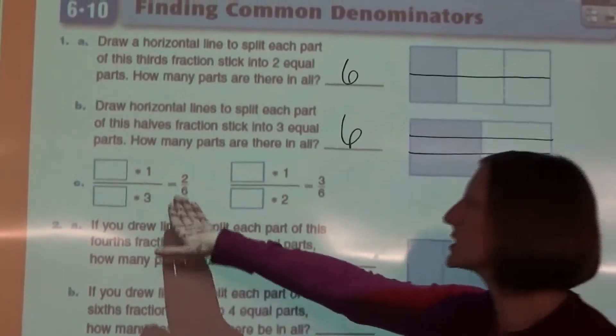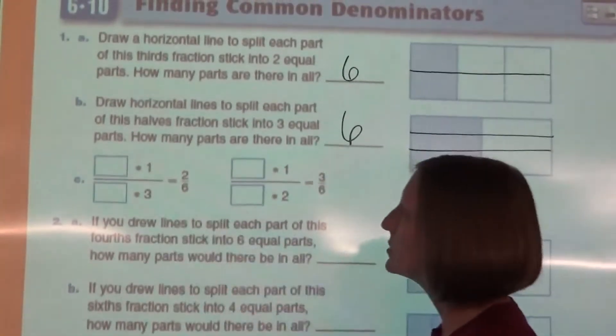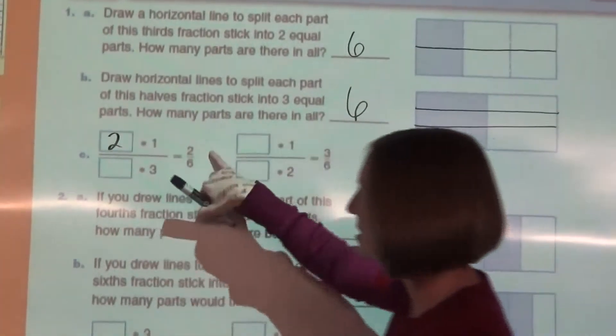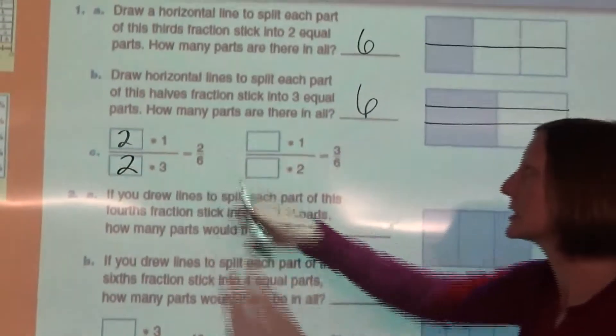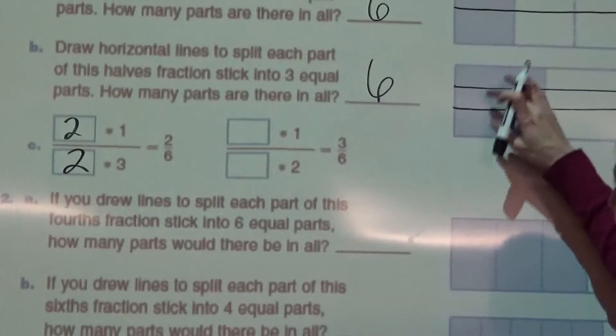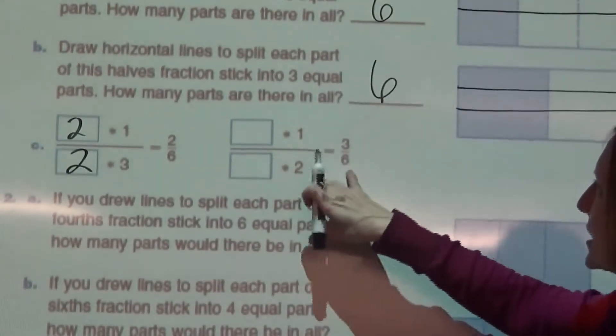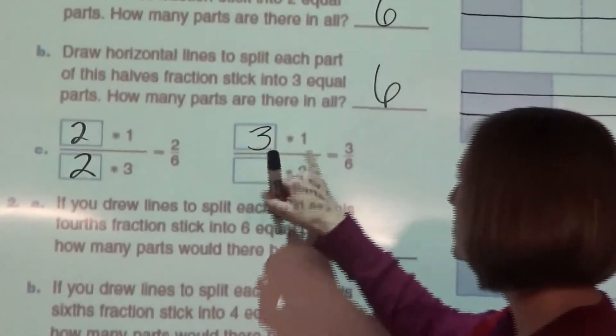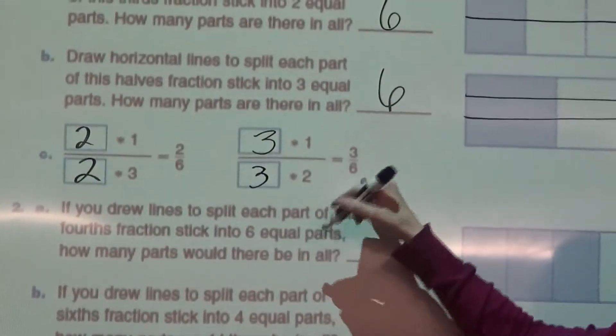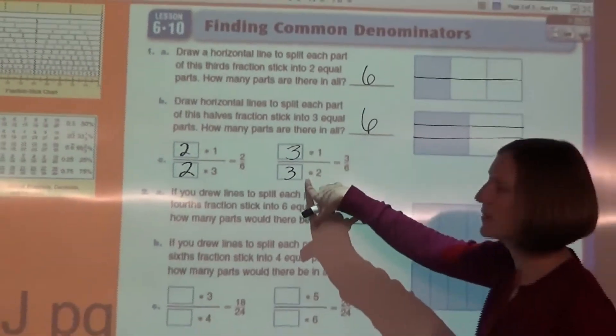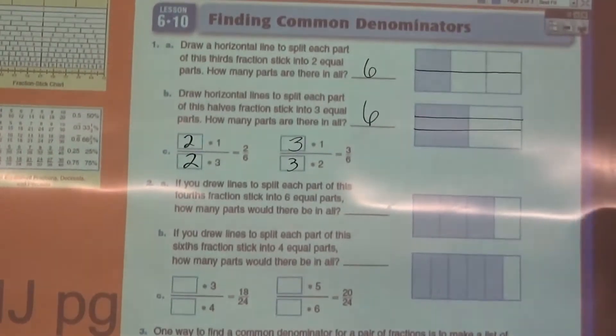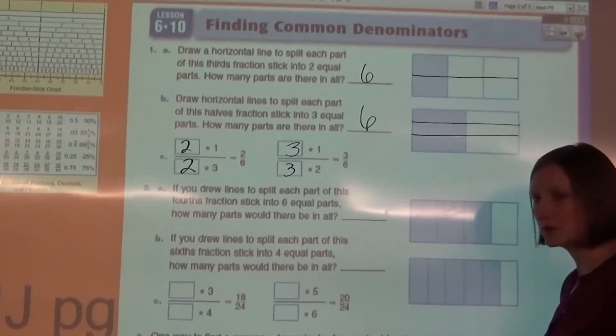So if we want to figure out how one third is equal to two sixths, here we split it into two equal parts. We did two times one is two, and two times three is six. So those are equivalent fractions. On this one, we split it into three equal parts. So half is the same as three sixths. We took three times one is three, and three times two is six. Remember, when you're finding equivalent fractions, if you multiply by three on the top, you have to do the same on the bottom. That's one of the activities you'll be doing during this lesson to find equivalent fractions.